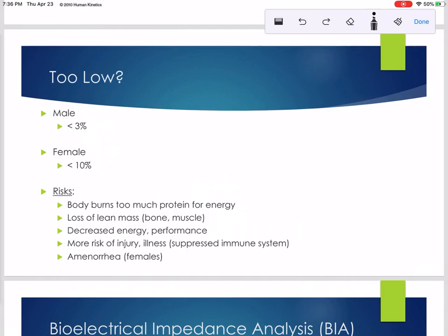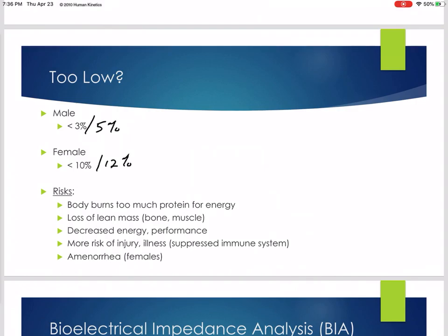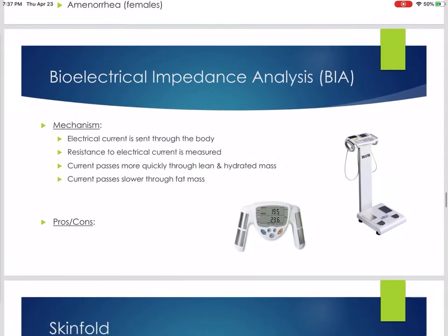Can body fat percentage be too low? Absolutely. Depending on the source, below 3–5% may be too low for males; for females, below 10–12%. Some athletes can go down the path of trying to get too low and then don't have enough body fat for essential functions, which can be very dangerous.